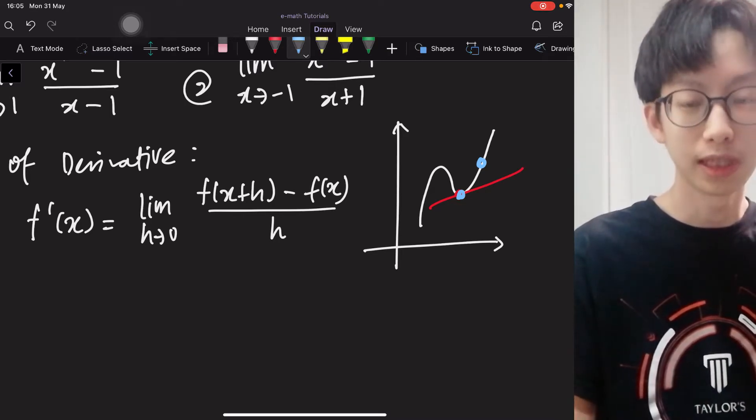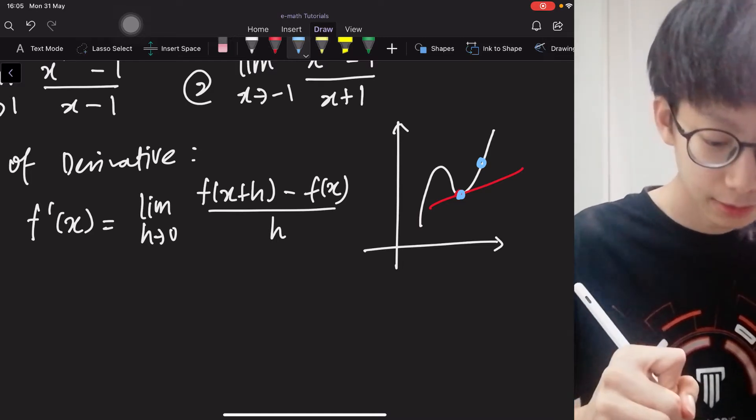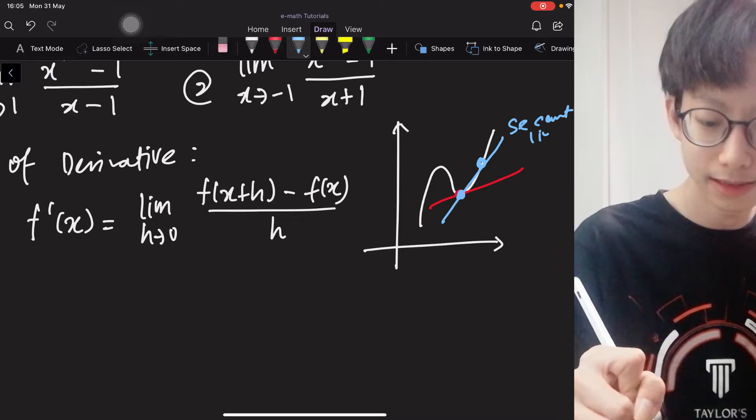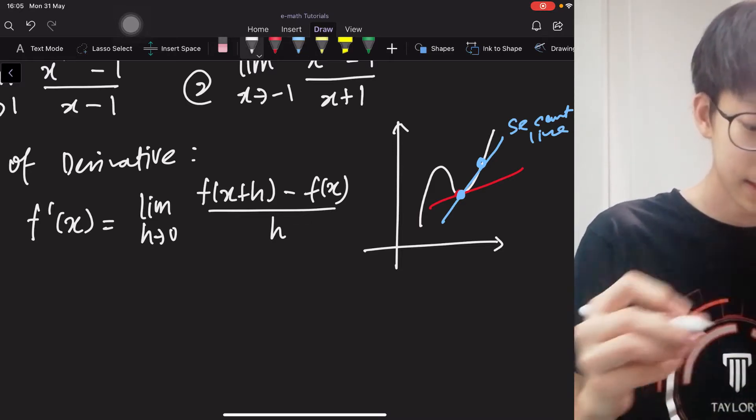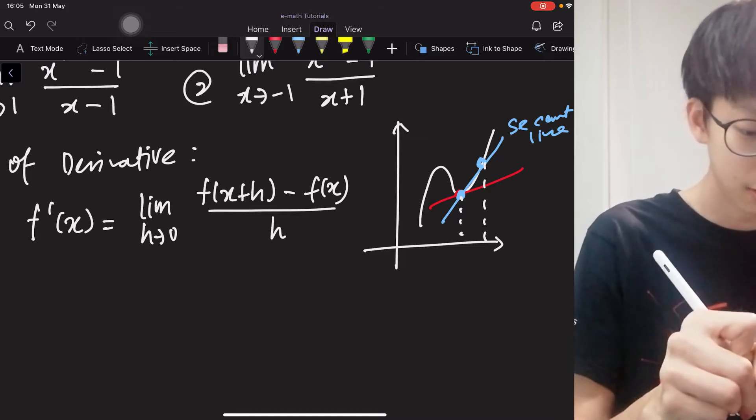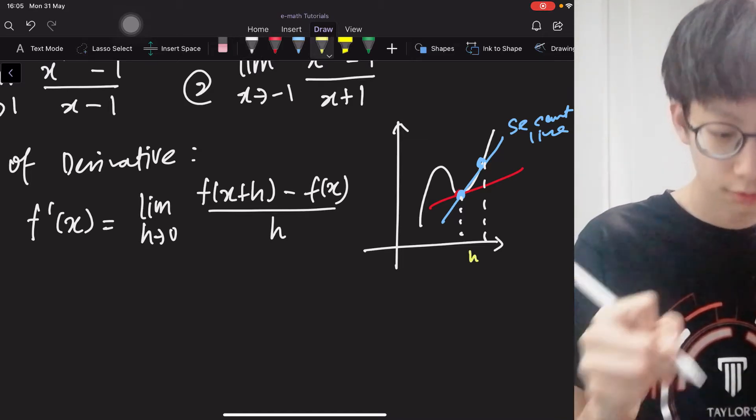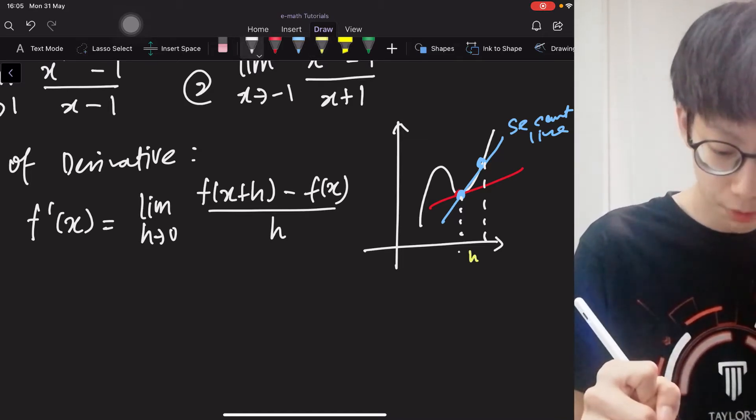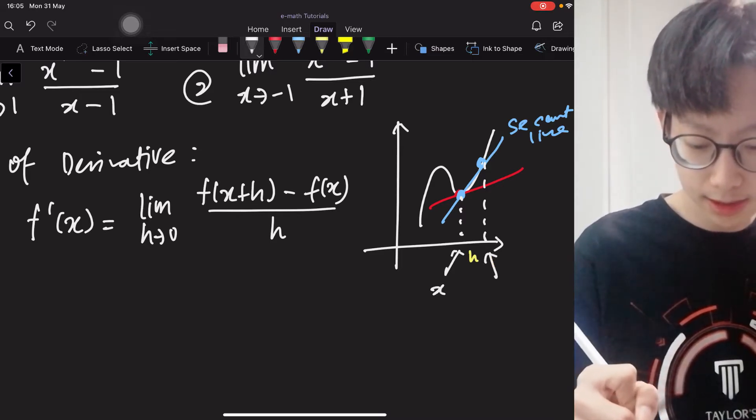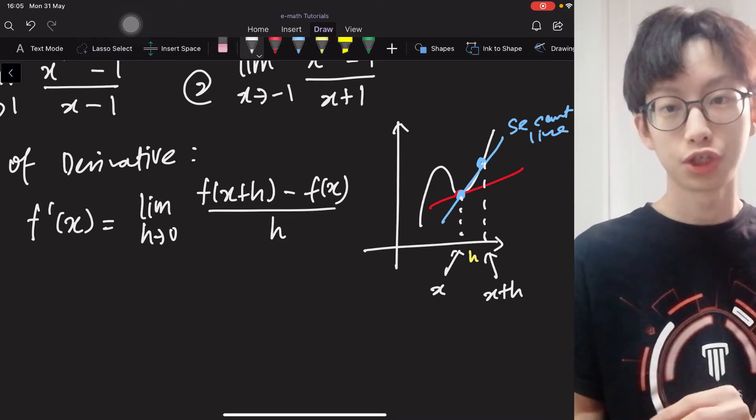One is exactly at the point where you want to find the tangent line, and simply another point that is close to that point. And you connect them. This is what we call a secant line. And then the distance, I mean the difference between the x coordinates, we call it h, which means this point here has an x coordinate of x, and this one is x plus h.